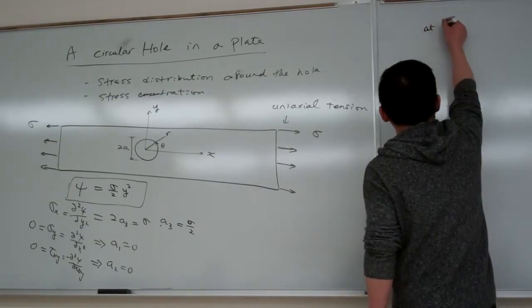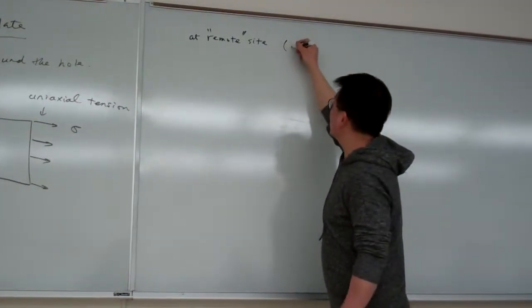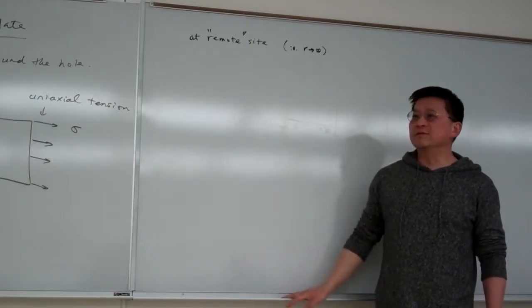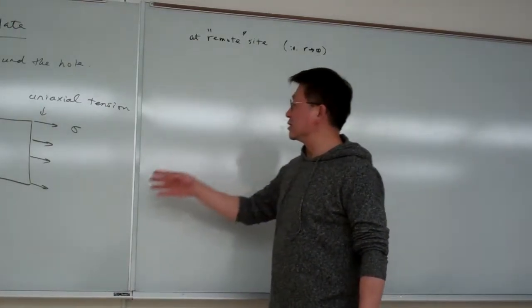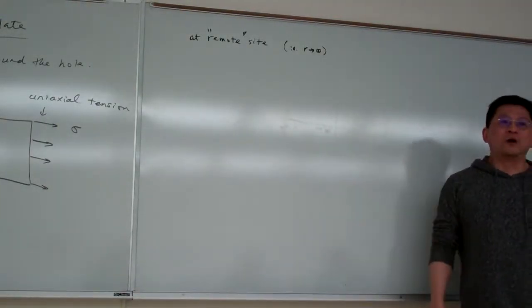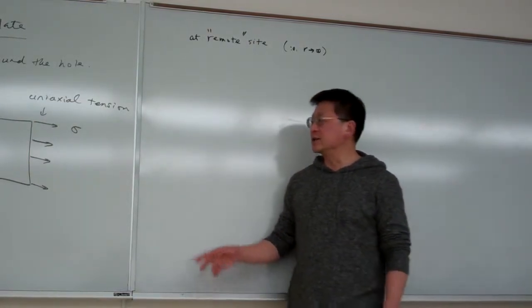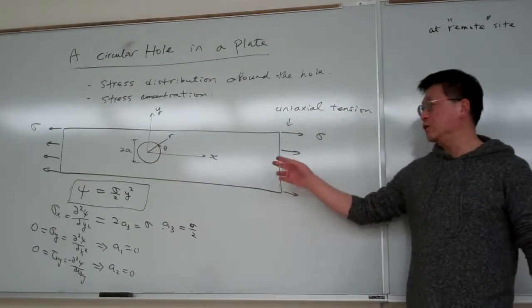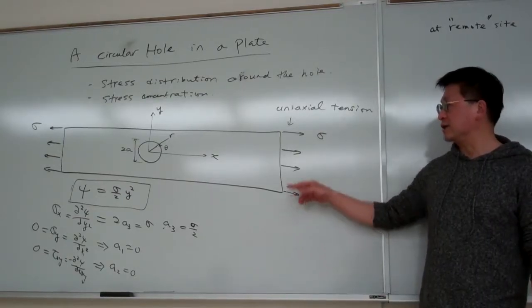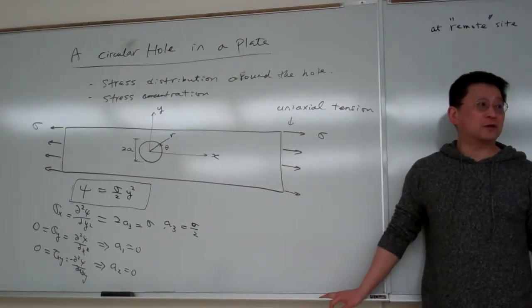So under that situation, the first one we'll look at at the remote site. For remote, that means as r approaching to infinity, assuming the plate is infinite in size. Approaching infinity basically is approaching to where the uniform loading applied. So again, if the hole is very small, and if we talk about the distribution of the stress at the remote site, we can pretty much approximate the stress. That small defect won't have any significant influence. So very good assumption is this, the stress on this side is pretty much the same as without a hole. I think that is a very common, very good assumption.